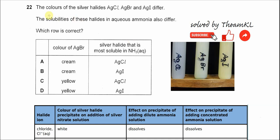Question 22: The colors of silver halides AgCl, AgBr, and AgI differ. The solubilities of these halides in aqueous ammonia also differ. Which row is correct? Okay, the first one is the color of silver bromide.